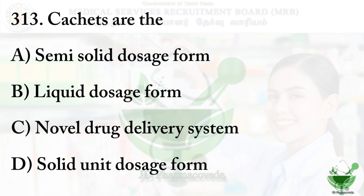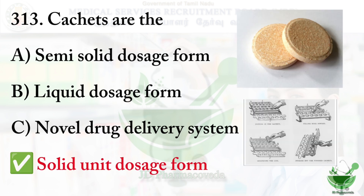Question number 313: Cachets are? Option A: semi-solid dosage form, Option B: liquid dosage form, Option C: novel drug delivery system, Option D: solid unit dosage form. The correct answer is Option D, solid unit dosage form. Cachets are molded from rice paper, made by pouring a mixture of rice flour and water. Nauseous or disagreeable powders in tasteless form are inserted between the cachets.